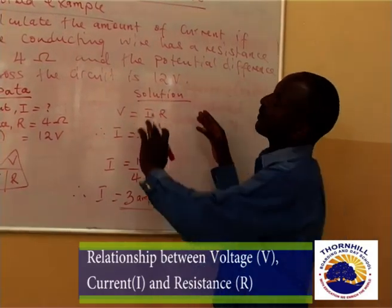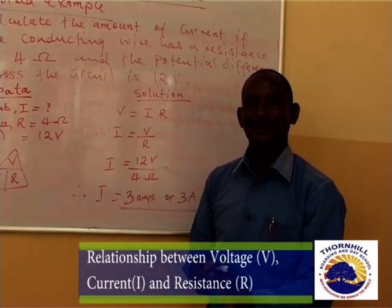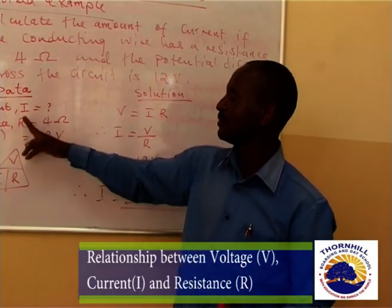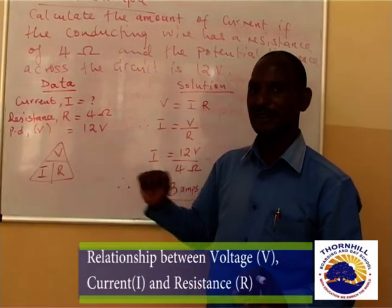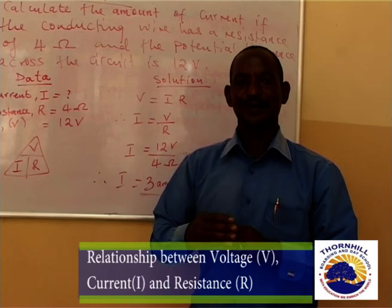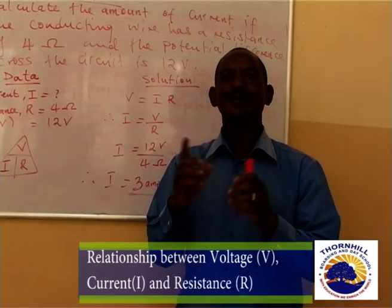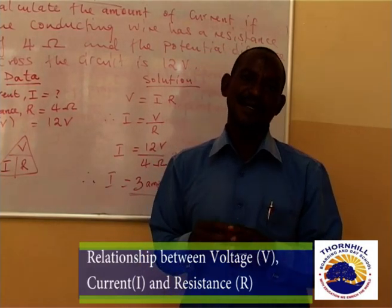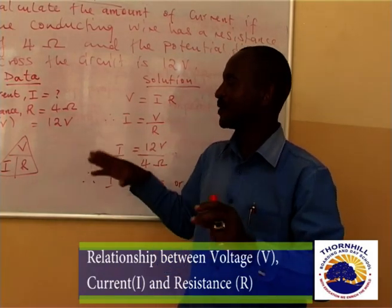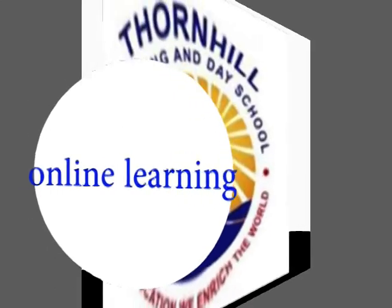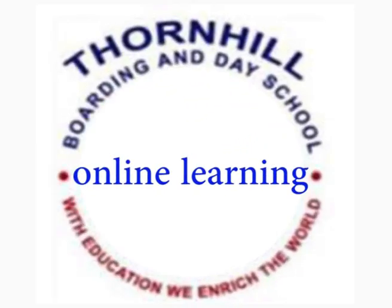As long as the temperature of the conducting wire remains constant, this is how we apply Ohm's Law. In conclusion, we have to know the symbols of current, resistance, and voltage, and be able to state Ohm's Law — because normally in your exams, we test your minds using Ohm's Law. In the next lesson, we look at how to apply Ohm's Law on a graph paper — how to graphically apply Ohm's Law and draw the relationship between current, resistance, and voltage.